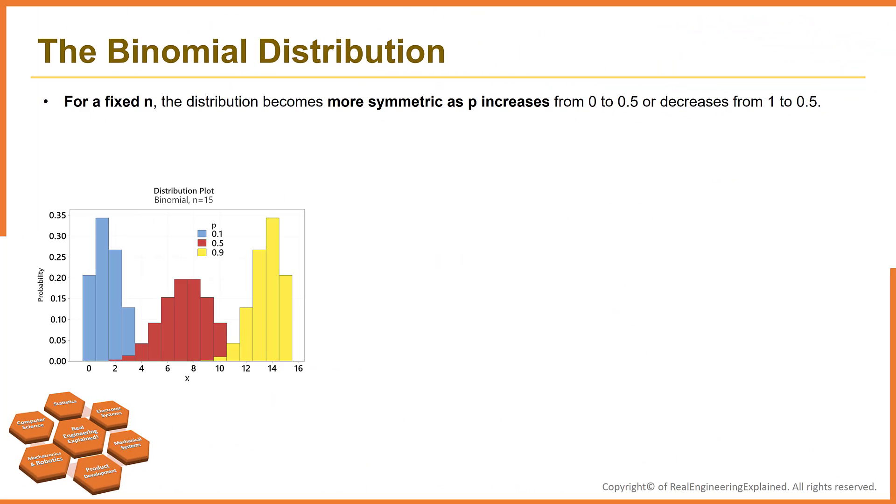The last topic which I would like to talk about is the property of binomial distribution. For a fixed n, the distribution becomes more symmetric as p increases from 0 to 0.5 or decreases from 1 to 0.5. For this case, n is 15. For p equal to 0.5 is more symmetric than p equal to 0.1 or p equals to 0.9.